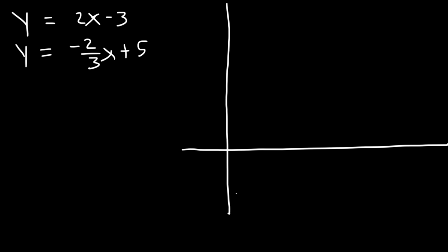In this lesson, we're going to solve a system of equations by graphing. The first equation is y equals 2x minus 3, and the second one is y equals negative 2 over 3x plus 5. What you want to do is graph the two equations and find out where the point of intersection is. That's going to be the solution.